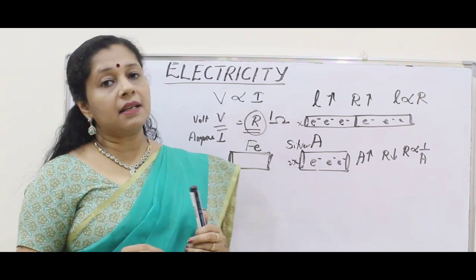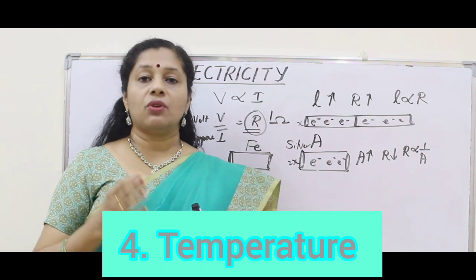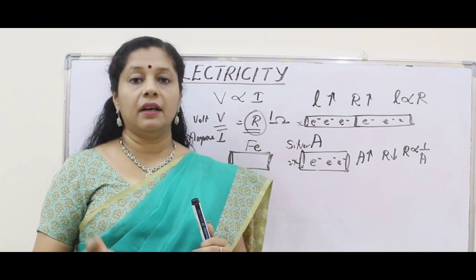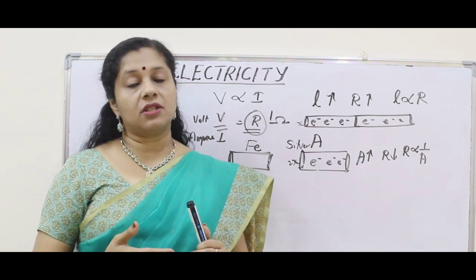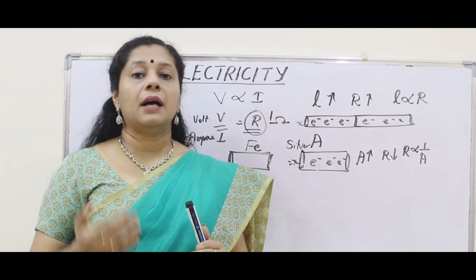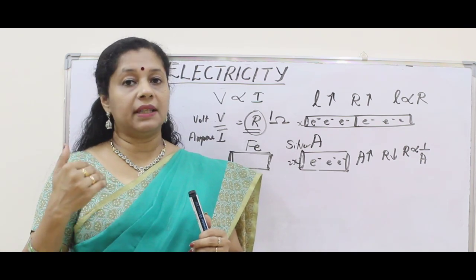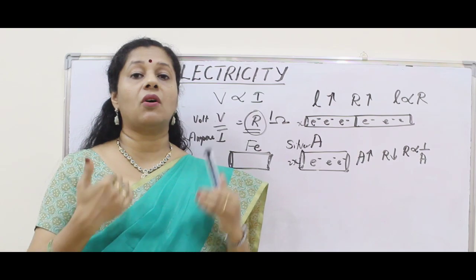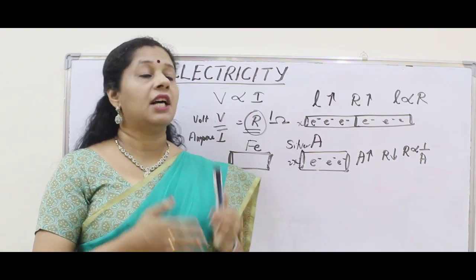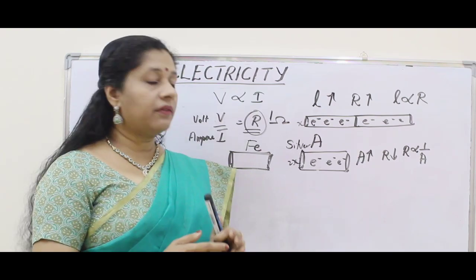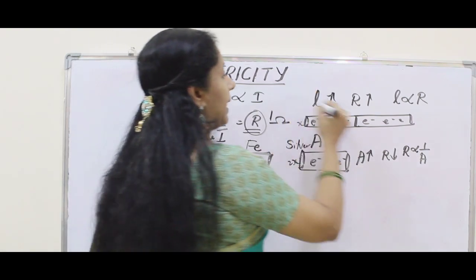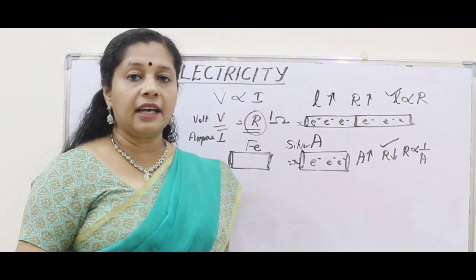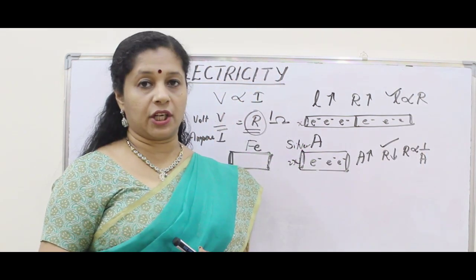The last factor is temperature. Changing temperature will definitely affect the resistance of a conductor. But in Ohm's law we consider temperature as constant. So for now we are going to consider two parameters only: length and area of cross section.